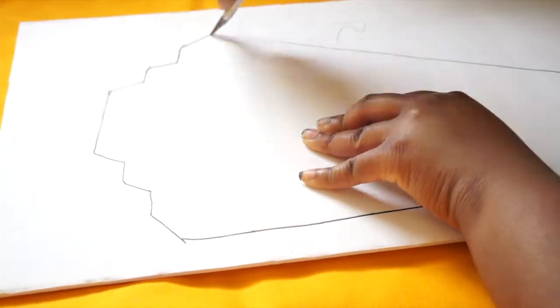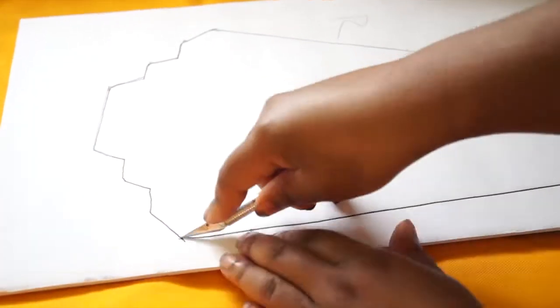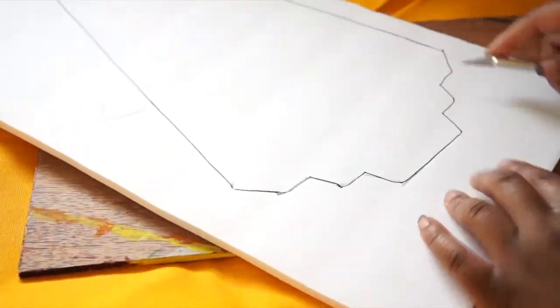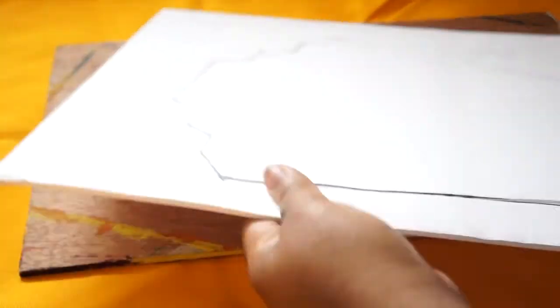Next, cut out your shape that you just traced. It should look like this.